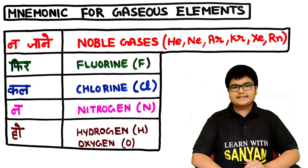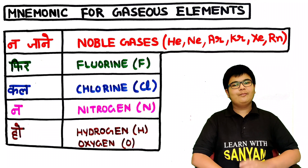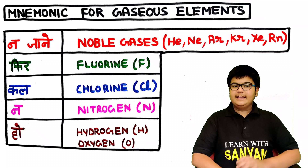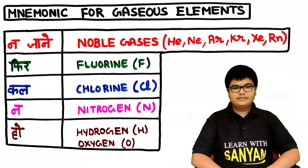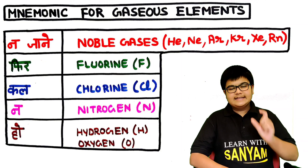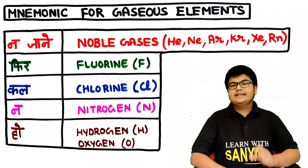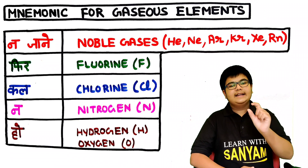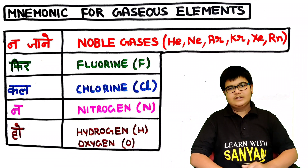First let's discuss the mnemonic to learn the gaseous elements of the periodic table. It is in Hindi: na jaane fir kal na ho. You can relate it to a story — some person is thinking about his future, na jaane fir kal kya na ho. In this mnemonic, 'na jaane' stands for noble gases, because N comes from 'na' and G comes from 'jaane'.